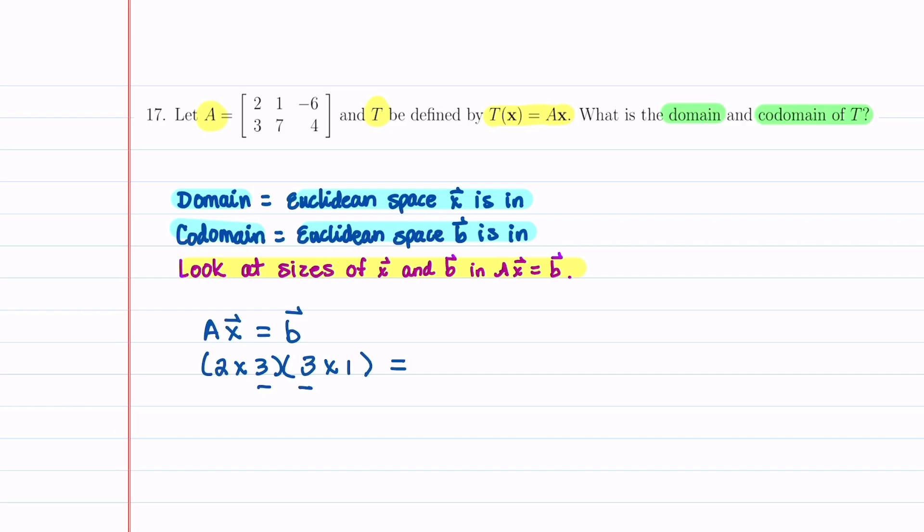We can think of these two numbers as canceling, and that tells us that our B then is going to be a two by one matrix. So X is an element of R3, and B on our right-hand side is an element of R2.